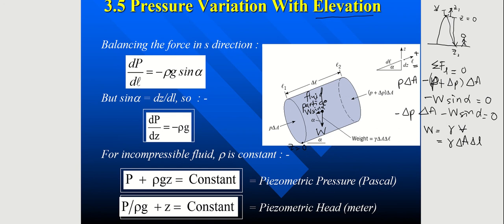And for the sin alpha, so you can see here sin alpha is basically delta Z divided by delta L because delta Z is this distance or this vertical height from this datum. And L is the length of the fluid particle.